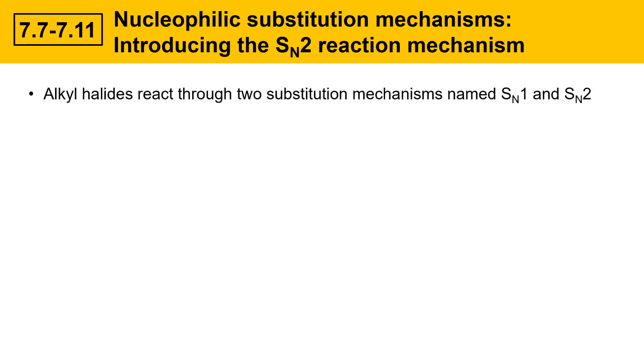Alkyl halides react through two substitution mechanisms named SN1 and SN2, and we're going to study SN2 first. So the first thing we need to do is figure out what these symbols mean.